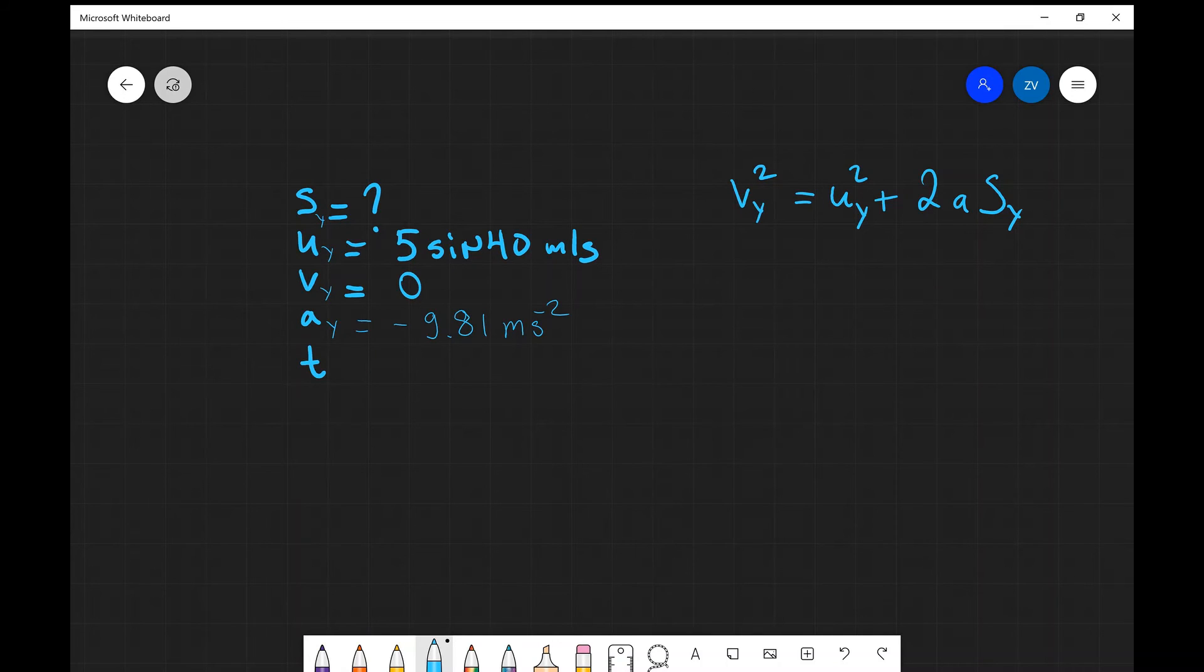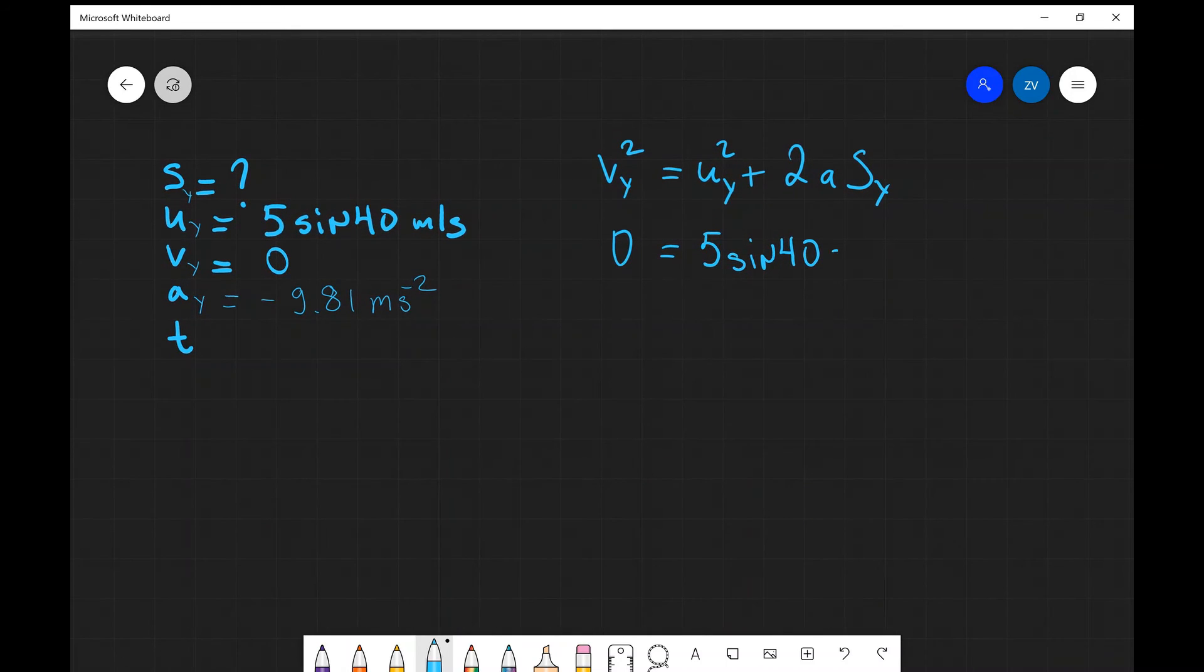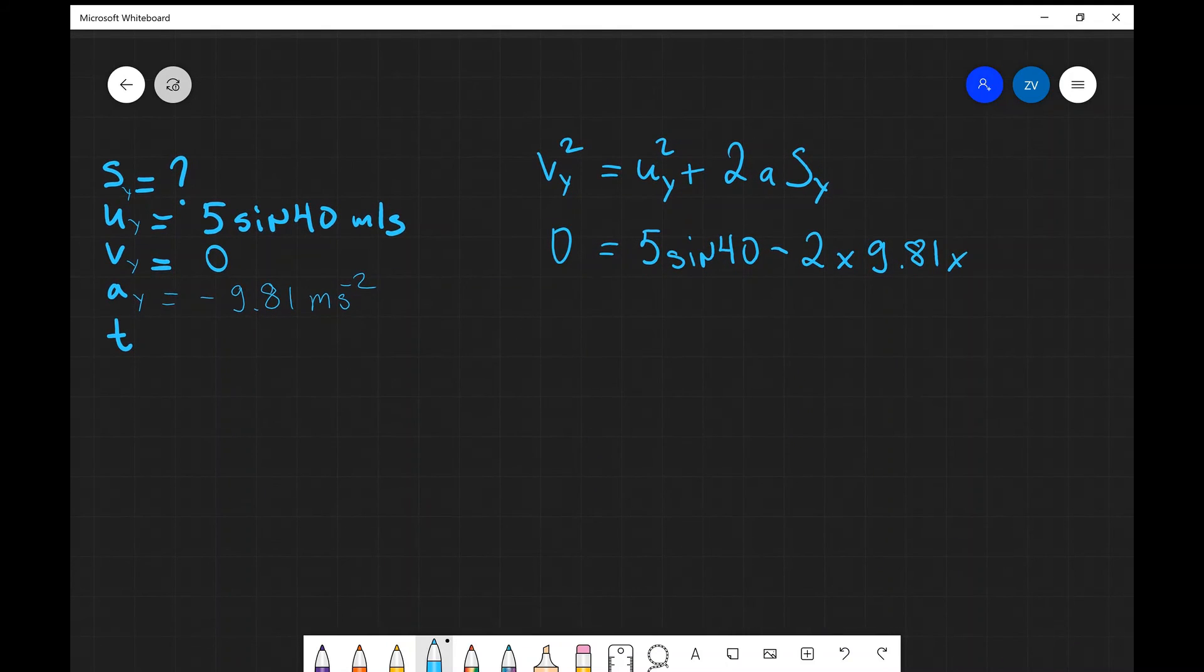Okay, now so I can start inputting some numbers in. So my final velocity is 0, my initial velocity will be 5 sin 40, my acceleration is minus 9.81, so I'm going to put the minus sign here. I'm going to say that it's minus 2 times 9.81 multiplied by the displacement traveled in the y direction.